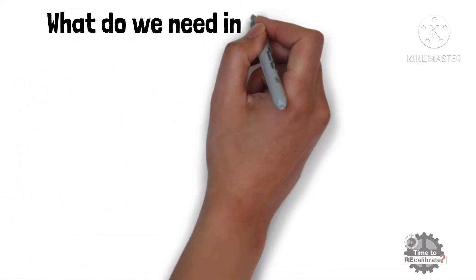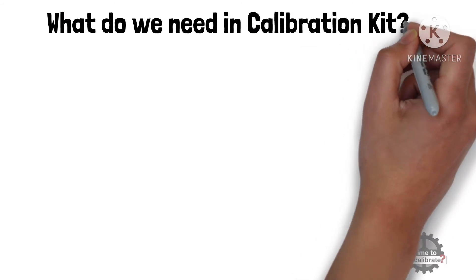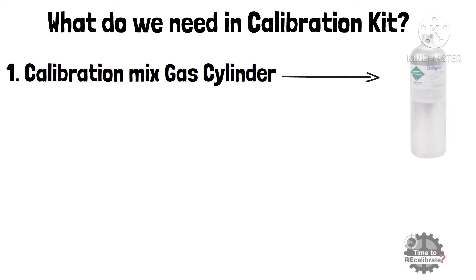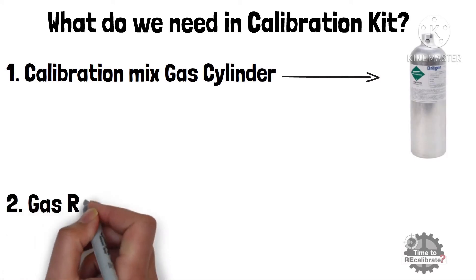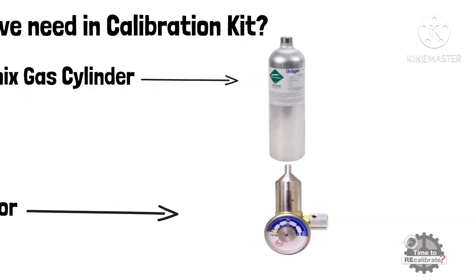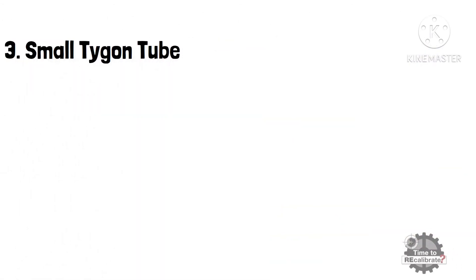Now, what do we need in calibration kit? First of all, we need mix gas cylinder. Secondly, we need gas regulator. Lastly, we also need small tigon tube.